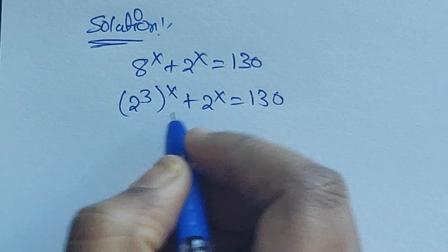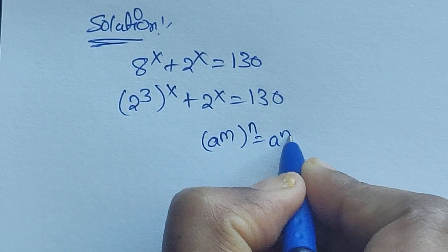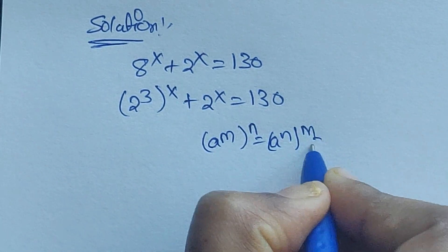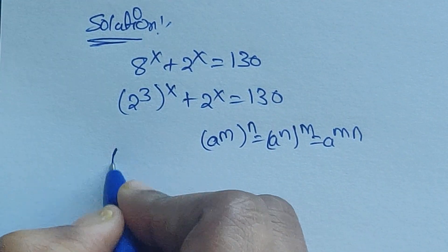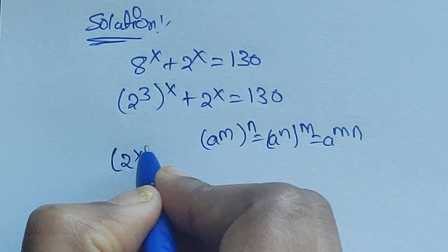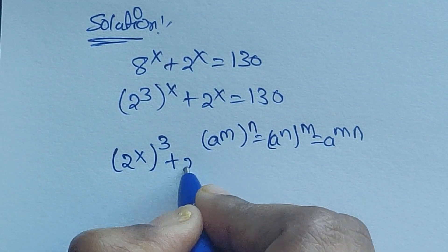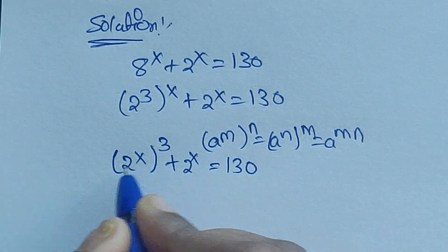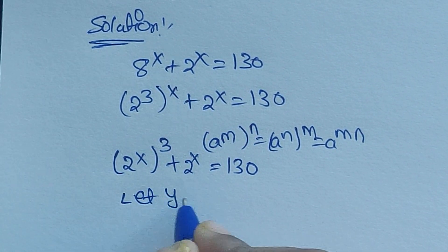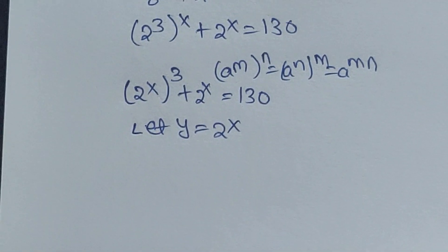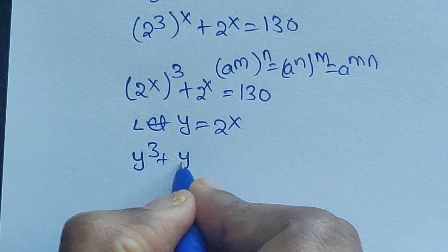Here we can use the formula: a to the power of m, whole to the power of n, equals a to the power of m times n. Using this formula, we write 2 to the power of 3x plus 2 to the power of x equals 130. Now let us consider y equal to 2 to the power of x.